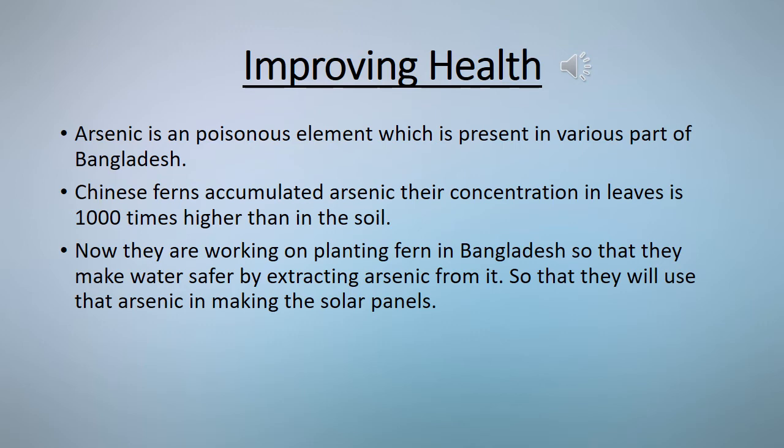Scientists want to plant millions of these ferns along river banks in Bangladesh. They could make the water safer by extracting arsenic from it. Arsenic is also needed to make solar panels, so the scientists plan to extract the arsenic from the ferns and sell it.